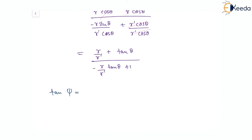We can rearrange this and write tan(ψ) equal to (R/R' + tanθ) divided by (1 − (R/R') tanθ).